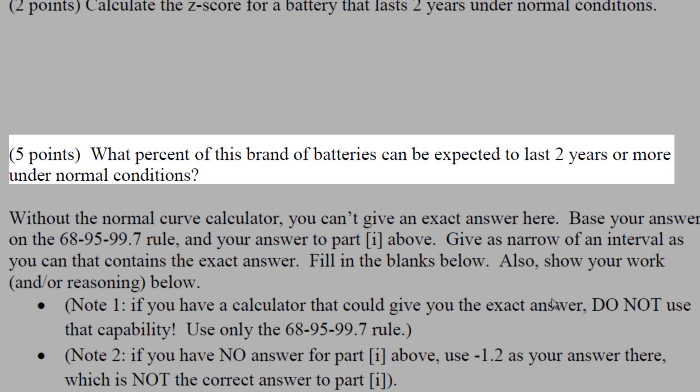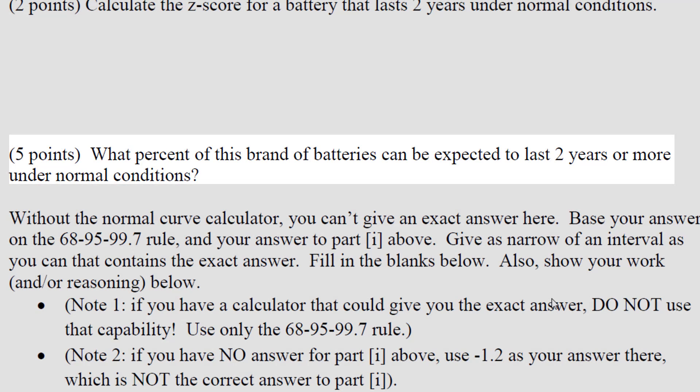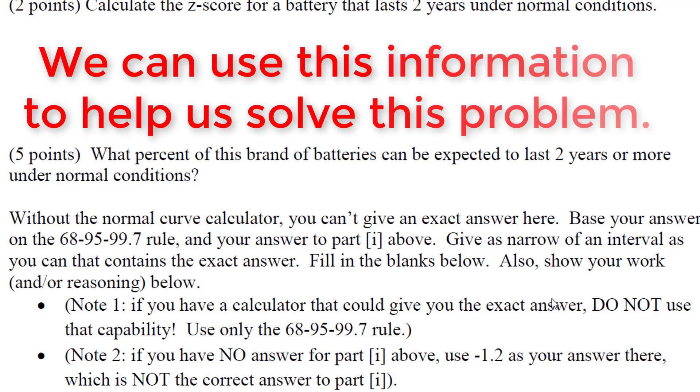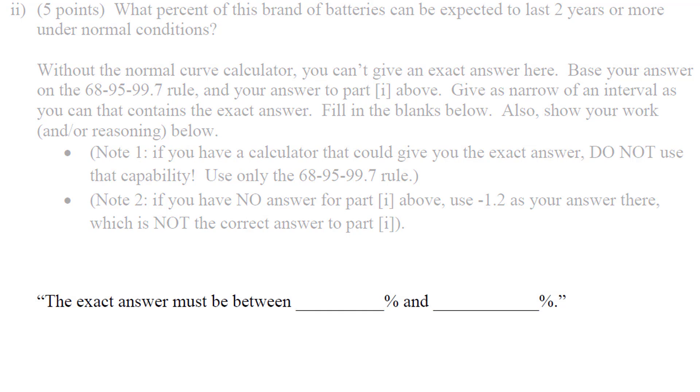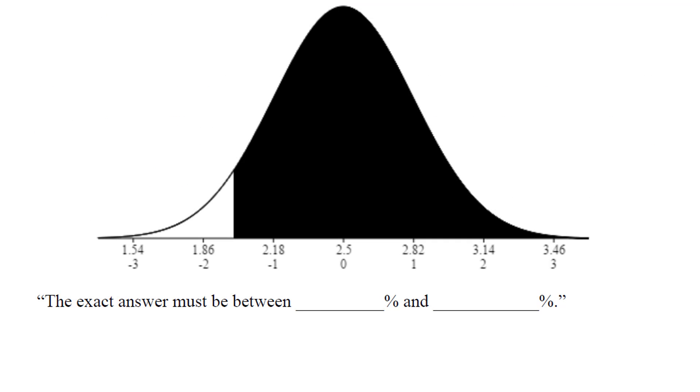Remember we just found the z-score for two years, which was negative 1.56. You're given an interval here, and the interval you're given needs to be above and below a certain amount, so we can put two numbers here that contain the percentage. Let's first draw out a curve and put the shaded area above negative 1.56.